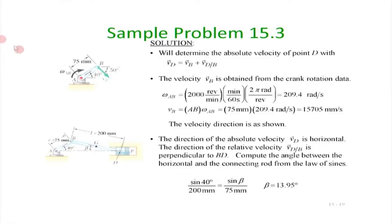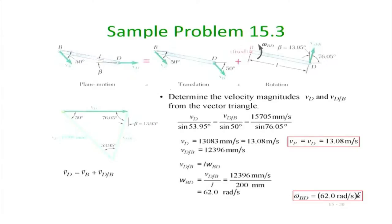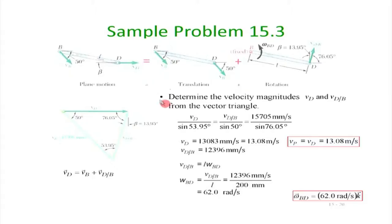Now, the entire motion of rod BD is neither pure translation nor pure rotation about a fixed point. So what we do is use the concept discussed before: break the motion into two parts — translation along the direction of B with velocity V_B, plus rotation of the rod about fixed point B with an unknown angular velocity ω_BD. We do not know that angular velocity. The velocity at point D with respect to B is ω × L, or the magnitude is L·ω_BD. We want to figure out the appropriate magnitudes. We know the velocity of point D must be in the horizontal direction.